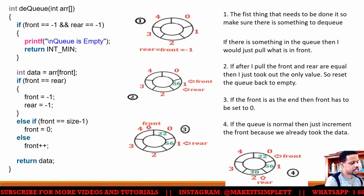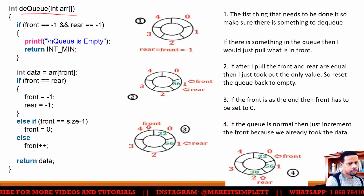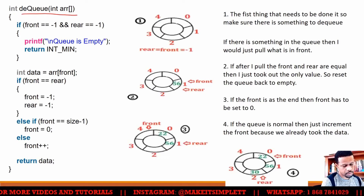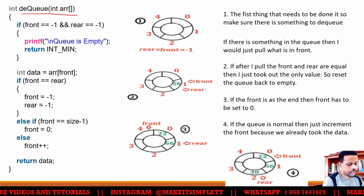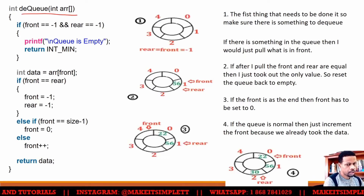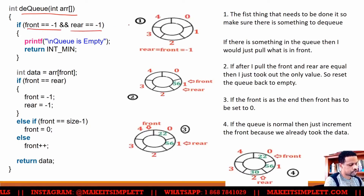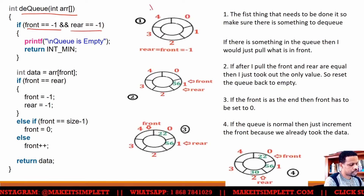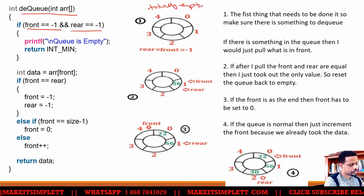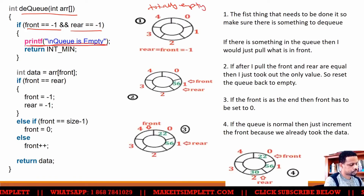So let's say we have to dequeue from a circular queue. Dequeuing from a circular queue is a little easier. You only have to check for four things. The first thing you have to check for is if front is equal to minus one and rear is equal to minus one. That means it is totally empty.